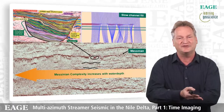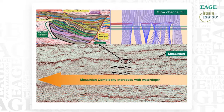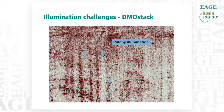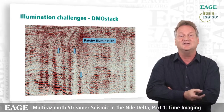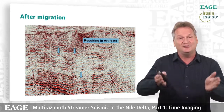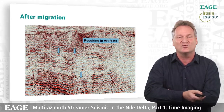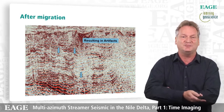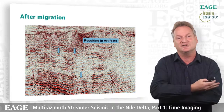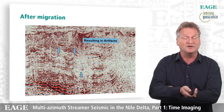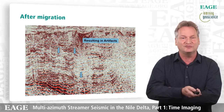The Messinian complexity increases with water depth. As you move away from the coastline, you basically start getting poorer and poorer data in the pre-Messinian section, which is where the Raven field was discovered. To illustrate those illumination challenges, here we're looking at a DMO stack — you can see the vertical striping of amplitudes. When you migrate that, these vertical stripes turn into migration smiles. These are the illumination issues you have when you have just a single towed-streamer survey to work with.